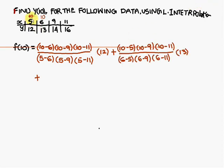Now move 10 to the second position, above x=6. The numerator values are (10−5)(10−9)(10−11) — do not write (10−6). The denominator is (6−5)(6−9)(6−11), and the corresponding y value at x=6 is 13.